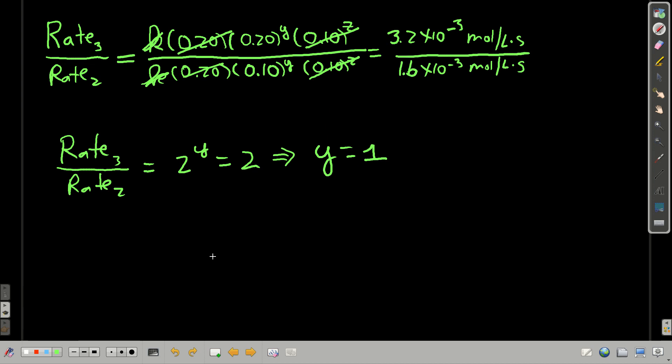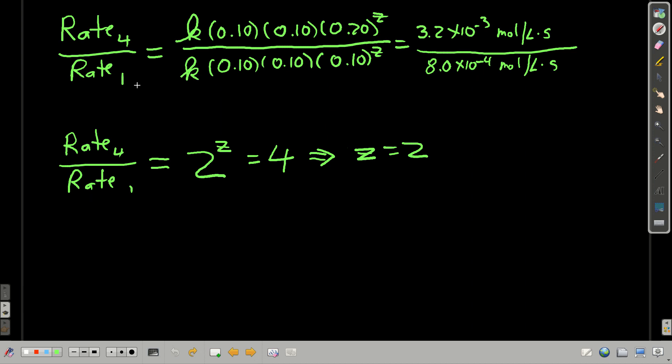We have two of the exponents. We're going to get the third. Same way. If you look, and I chose experiment four and experiment one to do this. And again, I did this because the only thing that's changing between experiment one and experiment four is the initial concentration of the hydrogen ion.